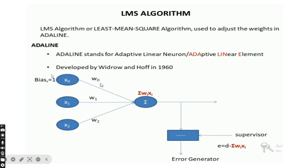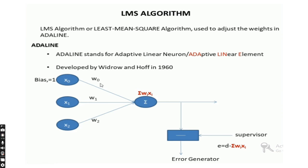From this diagram, we can understand that we have n input features applied across n different neurons, and each neuron is connected to a weight. For example, taking the first neuron: the weight is W0 and the input feature is X0. Likewise, the second neuron has weight W1 and input feature X1, and so on. The summation block is used to get the output — we sum all the weights with the input features. The formula is: summation of i = 1 to n of Xi·Wi.